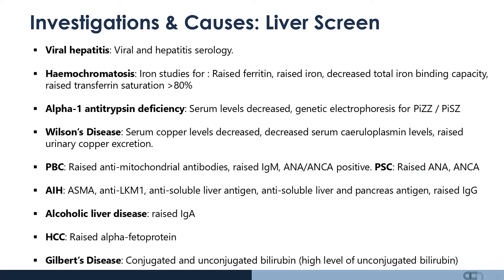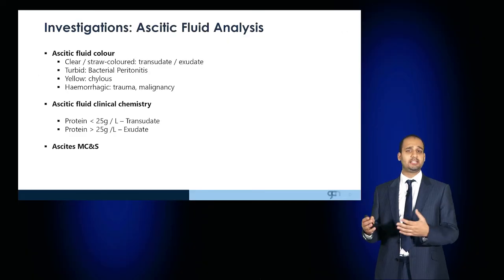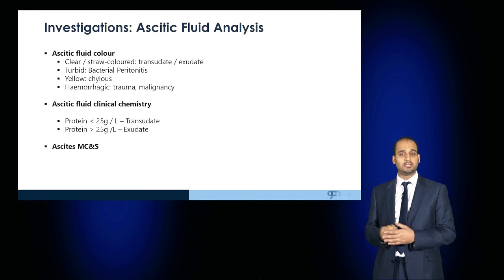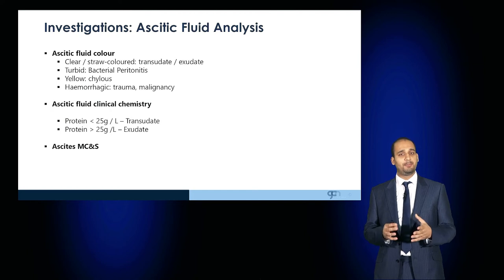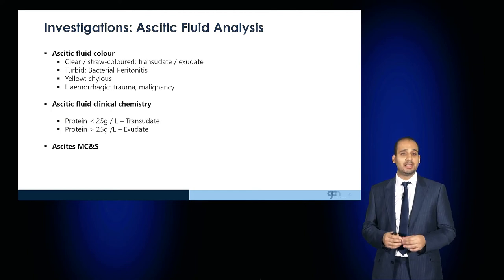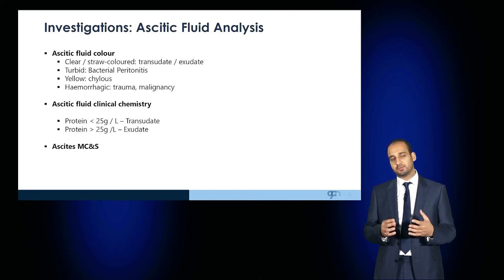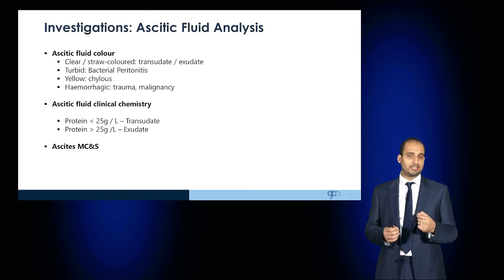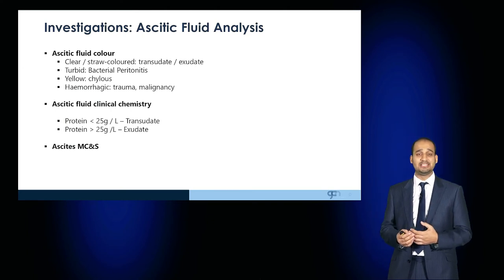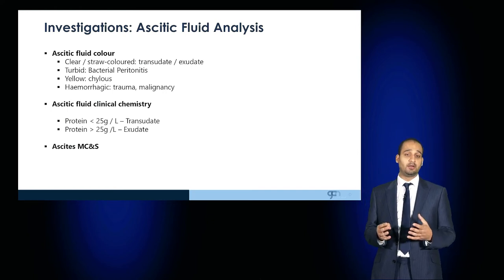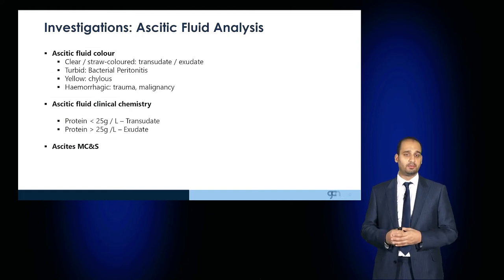If the patient has ascites, the ascitic fluid should be sent for analysis. Its colour should be assessed: clear straw colour is associated with transudates and exudates; turbidity may be the result of bacterial peritonitis; yellow would suggest a chylous collection; and a haemorrhagic appearance may be the result of trauma or malignancy. Clinical chemistry allows you to determine whether the ascites is transudative or exudative — protein content less than 25g/L for a transudate, or more for an exudate.